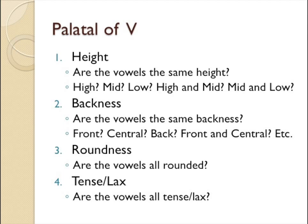Consonants are not the only thing we have in languages — we have vowels as well. The investigation of vowels is pretty much the same as consonants, except you have one extra question to ask yourself. When looking at vowels, you have to look at each column separately. So if you have two sounds, you would have four columns to consider. The first question is: are the vowels at the same height? Are they all high, mid, or low? Don't forget to take high-and-mid or mid-and-low in consideration as well, because that is still more restrictive than having all three, and it is not uncommon for a language to group them that way.